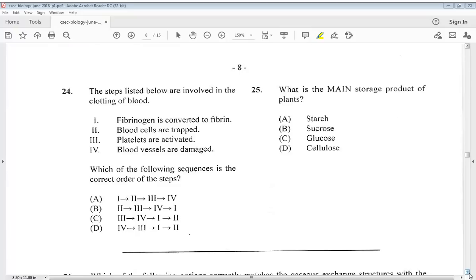Let's go to number 24. The steps listed below are involved in the clotting of blood. Fibrinogen is converted to fibrin. Blood cells are trapped. Platelets are activated. Blood vessels are damaged. Which of the following sequences is the correct order of the steps? We know that blood vessels are damaged first, then blood platelets are activated, then fibrinogen is converted to fibrin, and then blood cells are trapped. So D would be our answer. 25 says, what is the main storage product of plants? We know that it is A, starch.